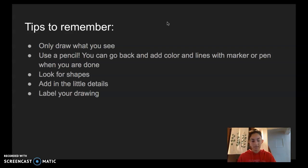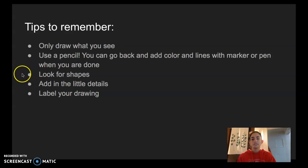The second tip is use a pencil. That's going to be really helpful — you can go back and erase when you're done, and then add colors and lines with markers, pens, or crayons. Another thing that helps is to look for shapes in your drawing. You also want to add in the little details and make it as real looking as possible. And then at the end, we're going to add words to our drawing to label all the different parts.